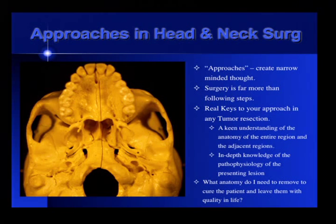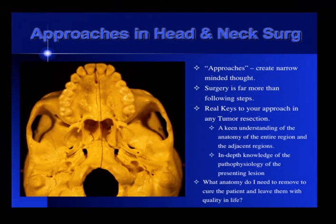The real key to any approach in tumor resection is you have to have a keen understanding of the anatomy of your region, as each of our professors have demonstrated. Then you have to understand the in-depth knowledge of the pathophysiology of the tumor. A one-centimeter adenoid cystic in the infratemporal fossa — take out a small margin, radiate the microneural disease. A one-centimeter recurrent poorly differentiated tumor — you're going to take out the whole infratemporal fossa. Same size, same location, but you have to understand in-depth knowledge.